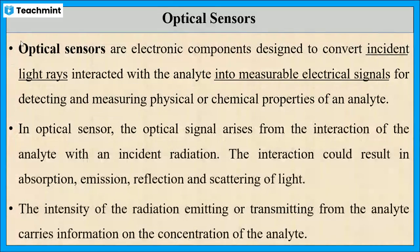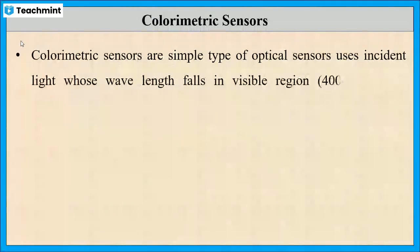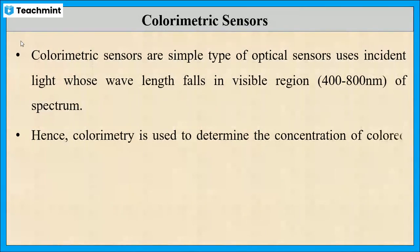Out of several optical sensors, colorimetric sensors are the simplest type, working in the visible region — that is, 400 to 800 nanometers. Hence, they are used to determine the concentration of colored chemical species.